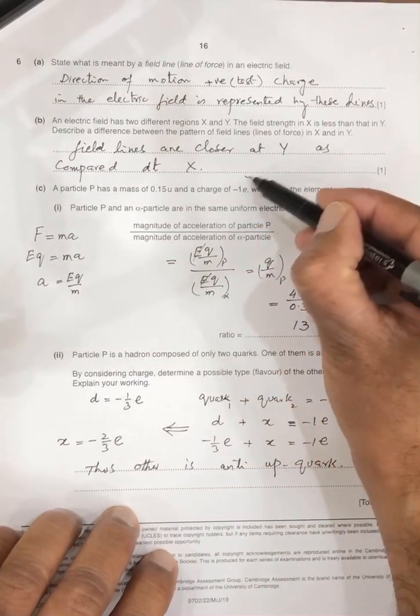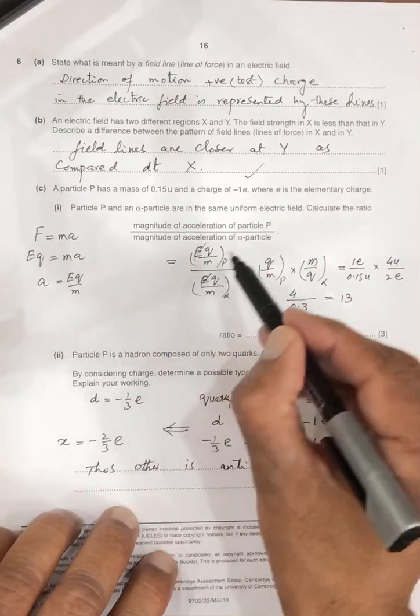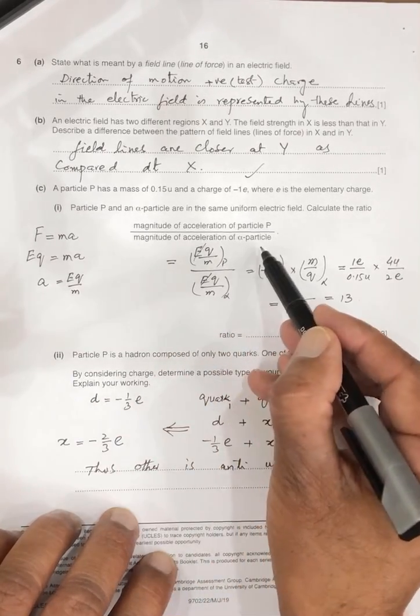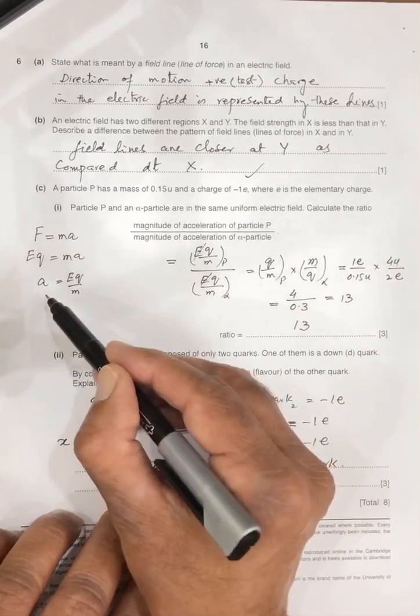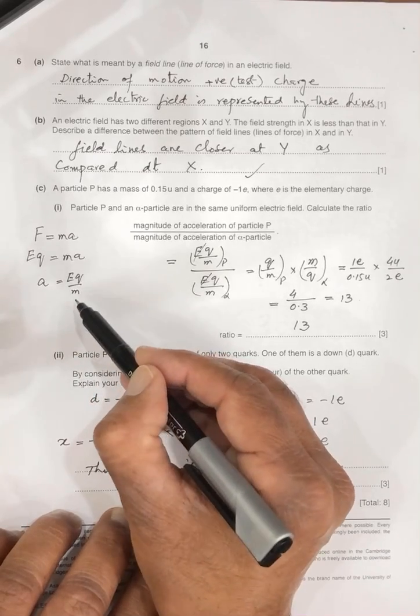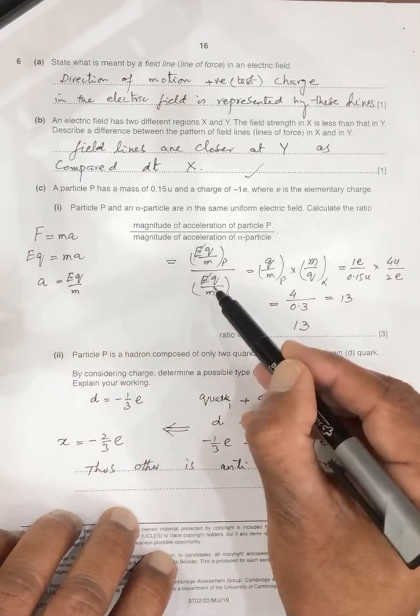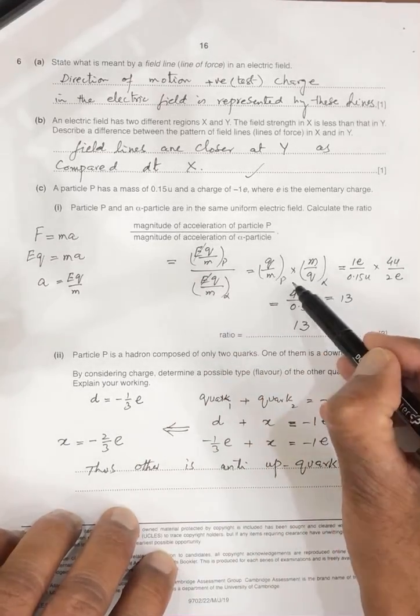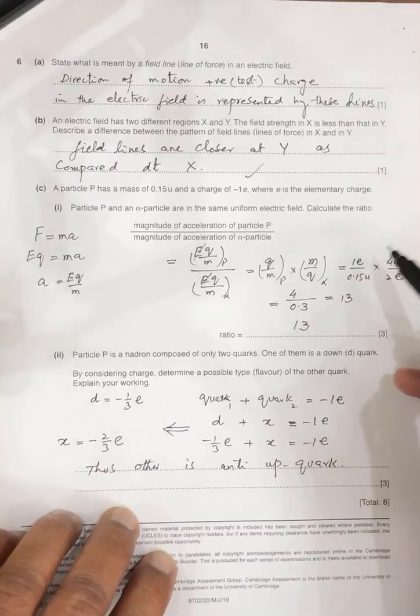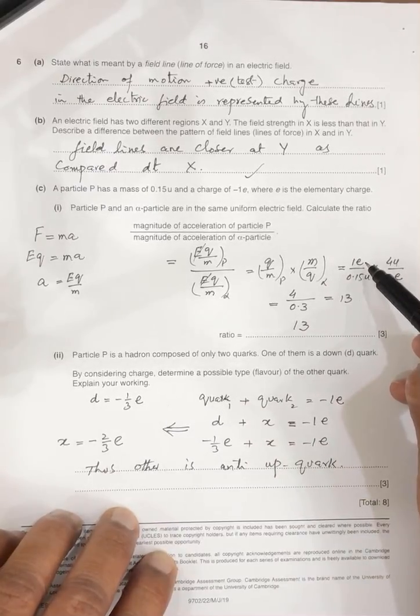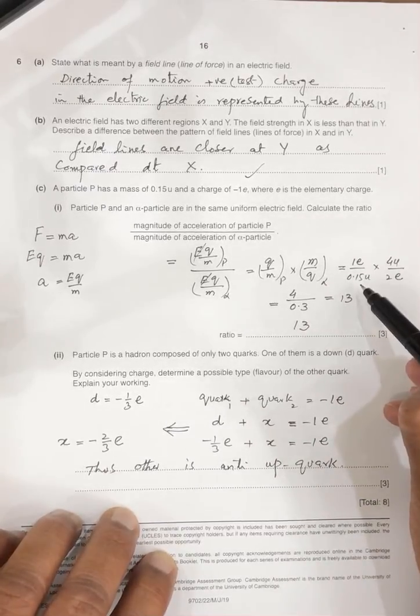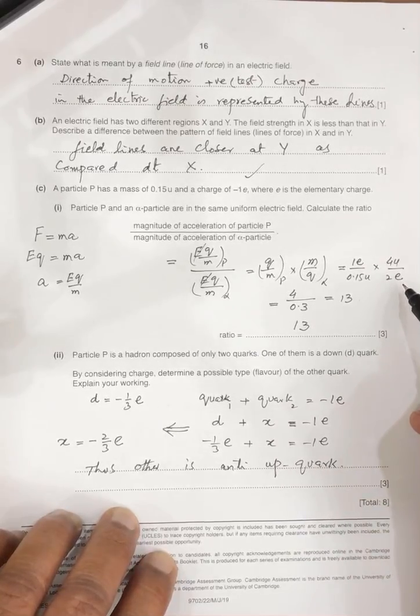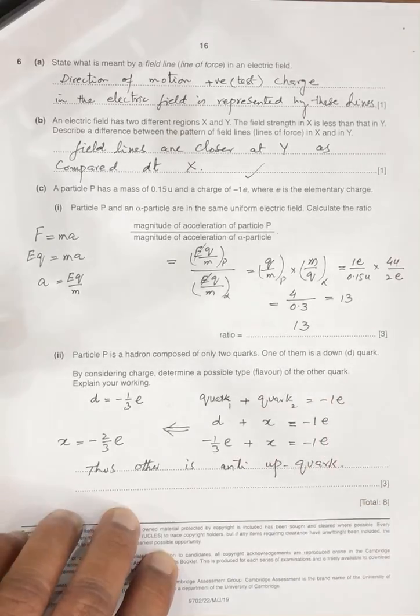And the next is one particle is P. Its mass given, its charge given. And the second is alpha. So the magnitude of the acceleration of the P, magnitude of acceleration of the alpha, F is equal to MA. So A is equal to F over M, mean EQ over M. So we can write EQ over M for P, EQ over alpha. So electric field is same. So Q by M for the P multiplied by M by Q of the alpha by putting the value 1E for P, mass of P, 0.15U, mass of the alpha 4U, divided by 2 times E for the alpha particle. So the ratio is 30.